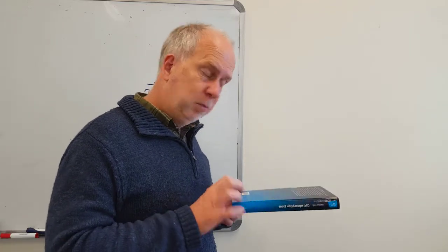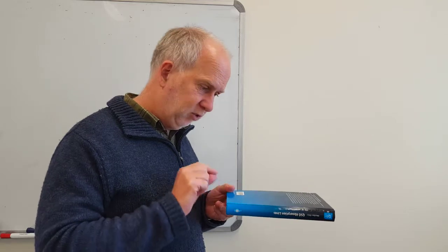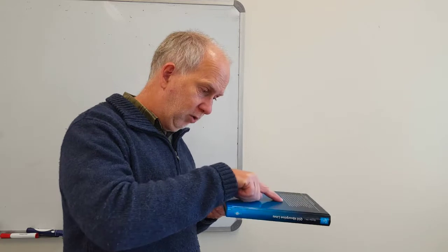We also need the displacement vector R and that's going to be the vector from the axis to the force. So here's the axis, so R is going to be from here to the force, so it's going to be along that.